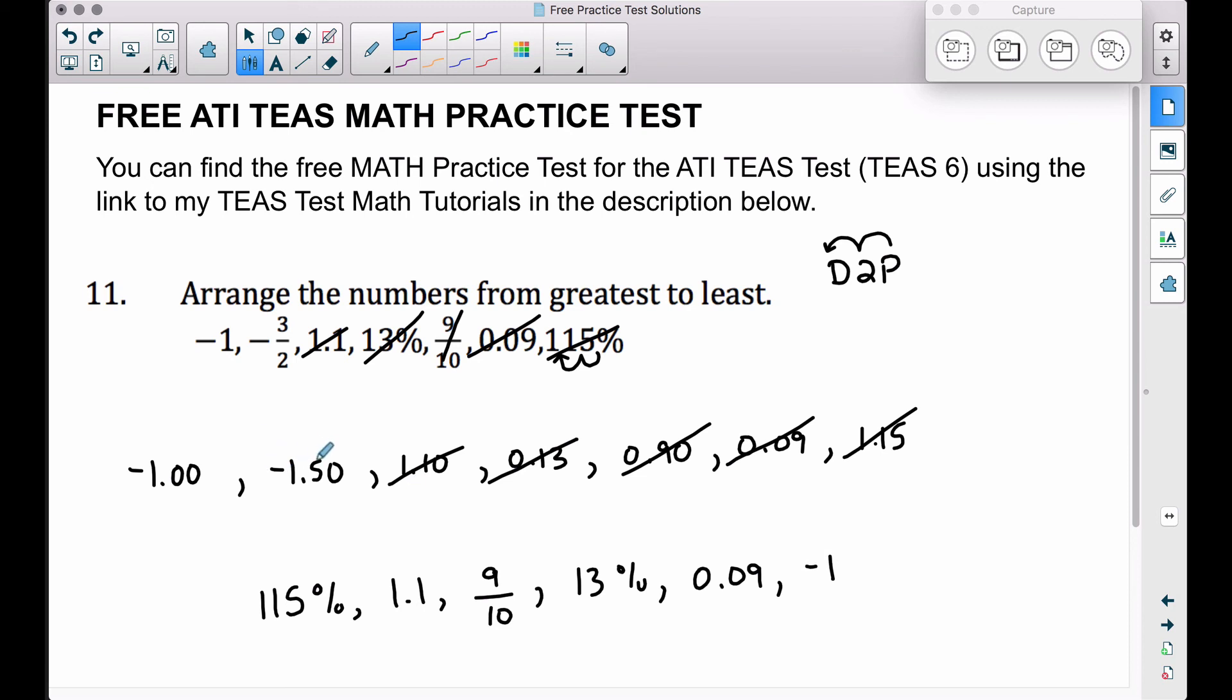So therefore negative one dollar is technically a little bit bigger than negative 1.5. Now this negative one dollar corresponds to that negative one, which leaves our last number, this negative three halves, this negative one dollar and fifty cents. That's going to be our smallest number in this set of numbers.